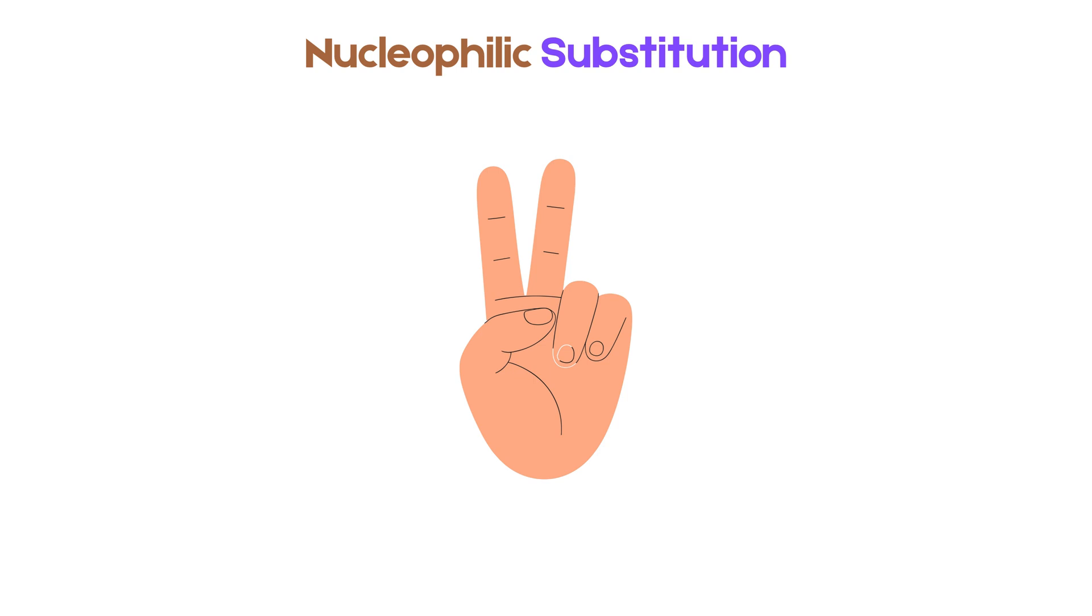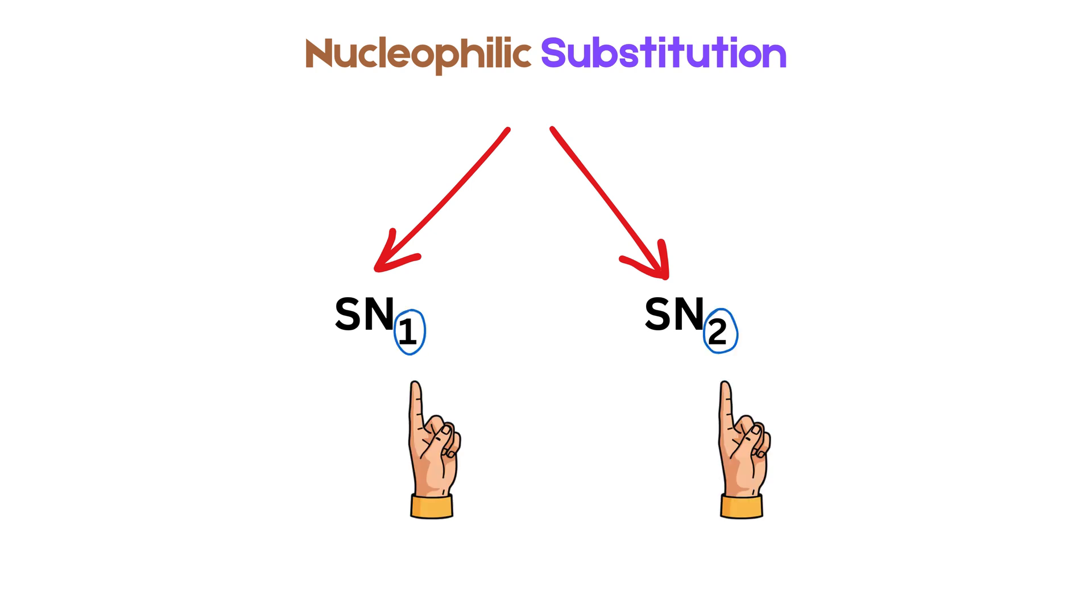Now there are two main types of nucleophilic substitution reactions, namely SN1 and SN2. SN stands for substitution nucleophilic. The one or two tells us whether the reaction depends on one molecule or two molecules during its rate-determining step. Let's look at both one by one.